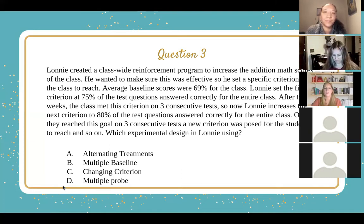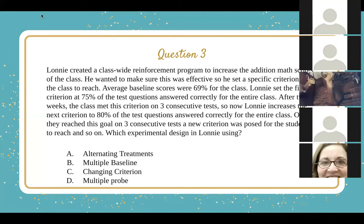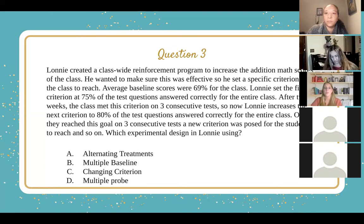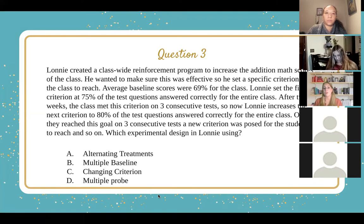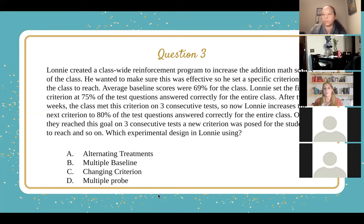With the changing criterion design, you do have a baseline — stated here at 69% for the class — and from there the criterion is changing, with each new criterion acting like a baseline for the next. Alternating treatments design is when you're alternating between two treatments, with or without a baseline, and a final best phase where you pick the best treatment. Multiple baseline design can be used across subjects, treatments, or settings in a staggered, stepwise fashion. Multiple probe involves sporadically probing rather than continuous connected data points.